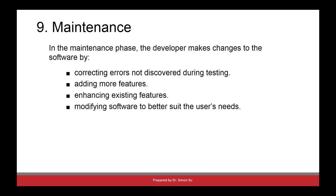Once the software is delivered to the customer, any changes to the software are called maintenance activities. There are several kinds of maintenance activities. For example, if there is a bug in the software and we correct it, that is called corrective maintenance. Sometimes customers may want the software to run in a different environment or on a different platform, requiring modification. It may also be the case that the customer wants to add new features to the system.